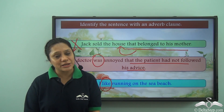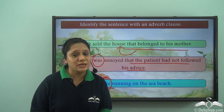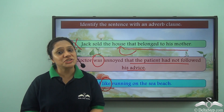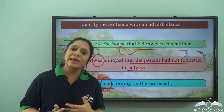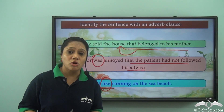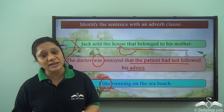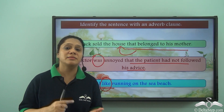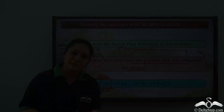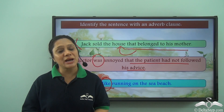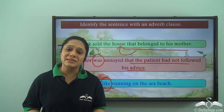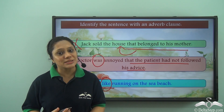Today we learnt in great detail about adverb clauses. Adverb clauses function like adverbs and can be of various types: they can show reason or cause, result or consequence, manner, comparison, and also time and place. We will soon learn about other clauses — in the meantime, take up many sentences and try to identify adverb clauses in them.